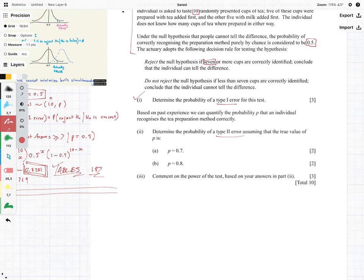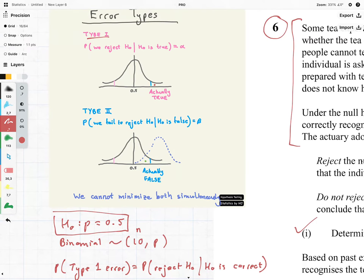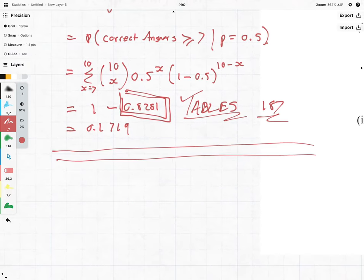Let's look at question two. Based on past experience, we can quantify the probability p that an individual recognizes the T preparation method correctly. Determine the probability of a Type II error, assuming that the true value of p is p is equal to 0.7. So what we're doing here, it's the probability that we fail to reject the null hypothesis, given that the null hypothesis is false.